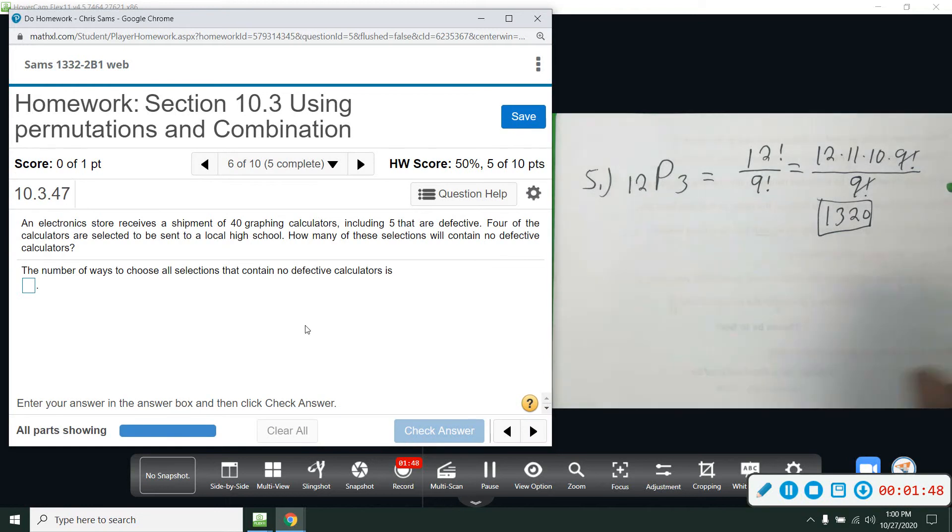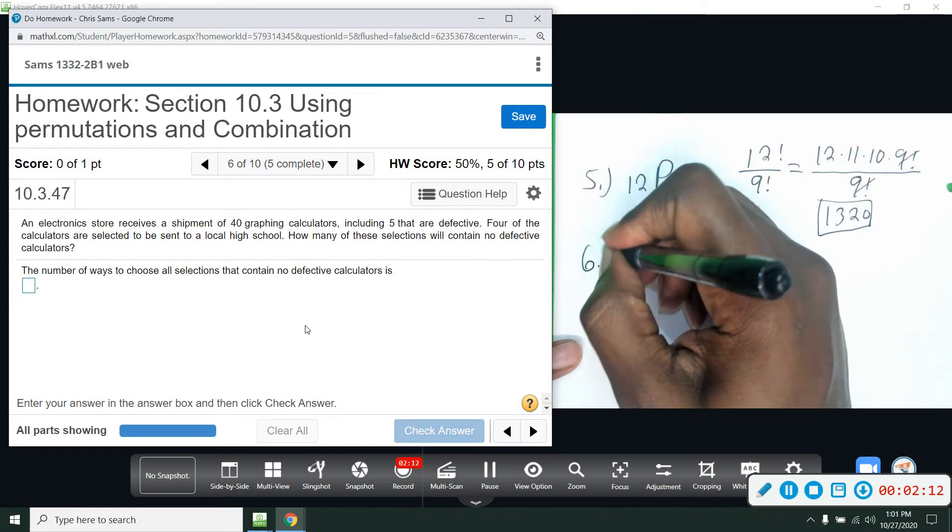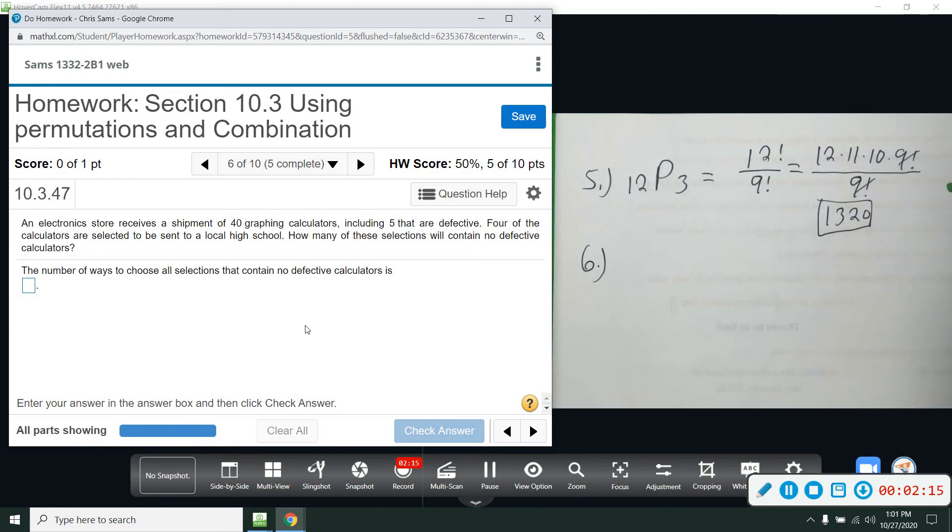All right, number six. Electronic store receives a shipment of 40 graphing calculators. Okay, so this problem is combining the fundamental counting principle from the previous section where you have to multiply each of those multi-stage events and their number of outcomes, with the combination. So we have to use combination to figure out how many are in the group and then multiply those together.